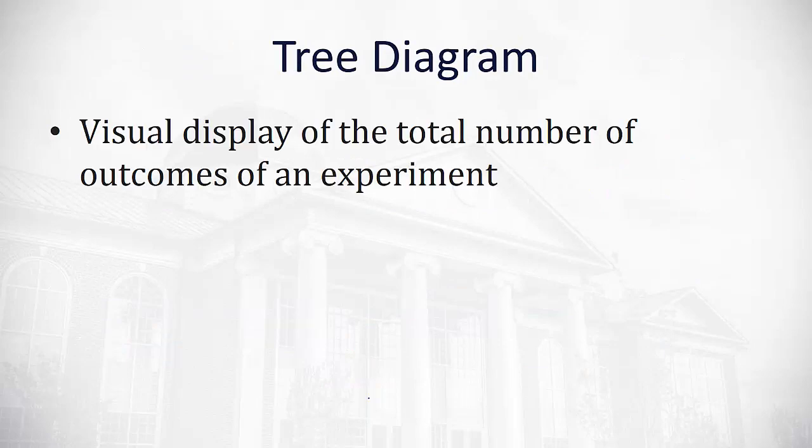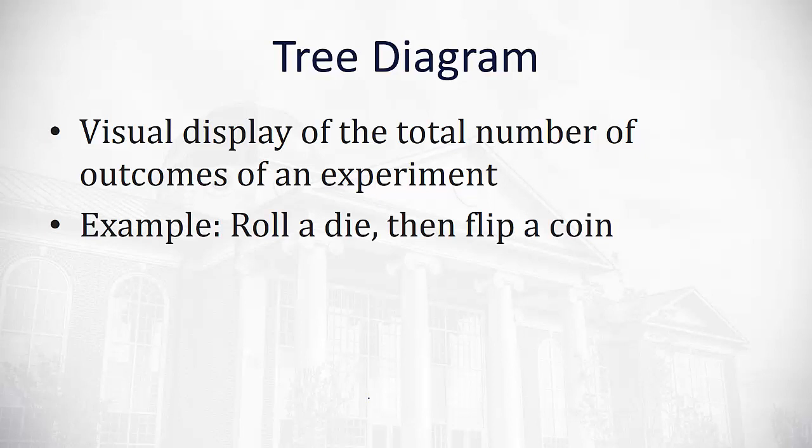Another thing we can do with our options is employ a tree diagram, which is a visual display of the total number of outcomes of an experiment. We'll have one branch to represent each possible outcome. So for example, if I were to roll a die and then flip a coin, we could do a branch of the tree to represent each possible outcome.